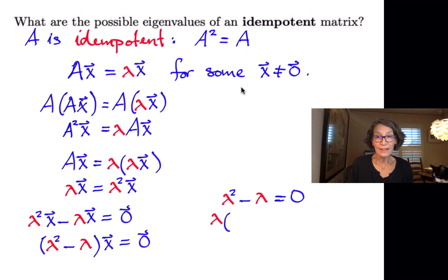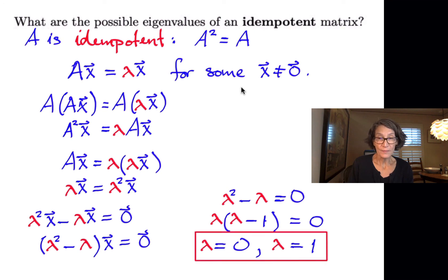All right, if we factor the left side, we get lambda times lambda minus one is equal to zero. And the only two solutions are lambda equals zero and lambda equals positive one. So those are the only two possible eigenvalues of an idempotent matrix.